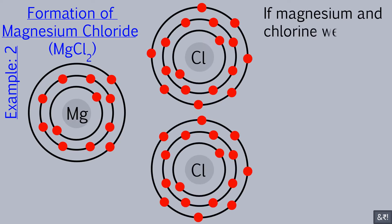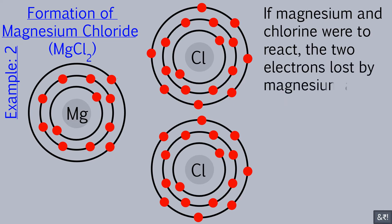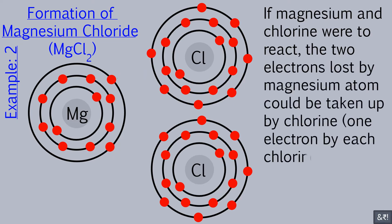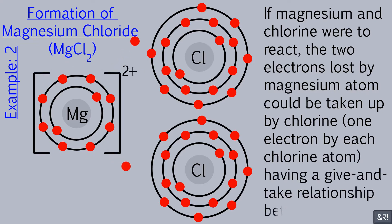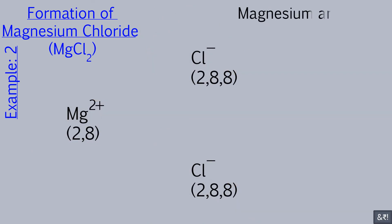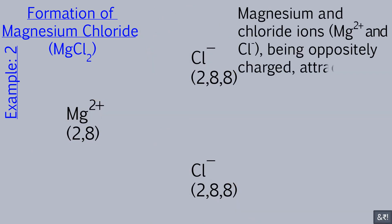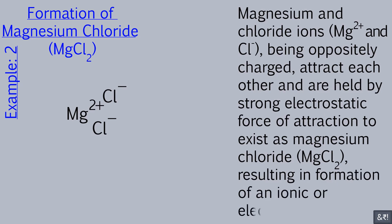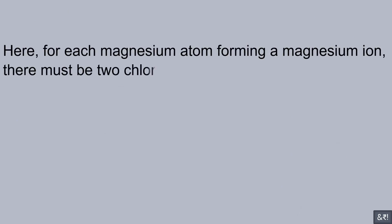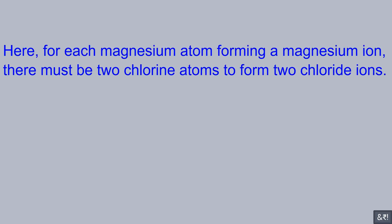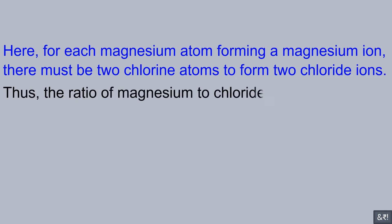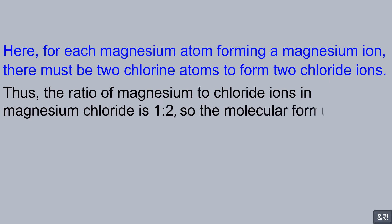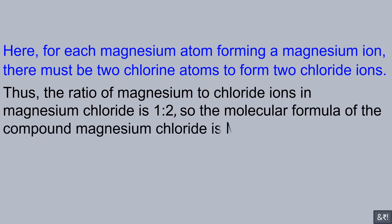If magnesium and chlorine were to react, the two electrons lost by the magnesium atom could be taken up by chlorine — one electron by each chlorine atom — having a give-and-take relationship. Magnesium and chloride ions, being oppositely charged, attract each other and are held by strong electrostatic force of attraction to exist as magnesium chloride, resulting in an ionic or electrovalent bond. For each magnesium atom forming a magnesium ion, there must be two chlorine atoms to form two chloride ions. Thus, the ratio of magnesium to chloride ions in magnesium chloride is 1 to 2, so the molecular formula is MgCl2.